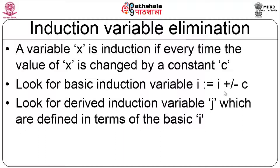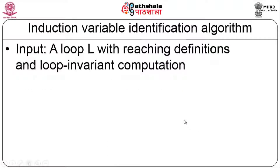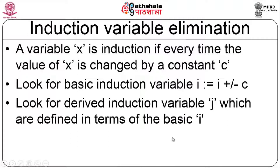We also have a derived induction variable, where the value of J is defined in terms of the basic induction variable I. That is, J equals I plus or minus some constant C. Typically, J is expressed as I times C plus D — a multiplicative constant C with an offset D. Every time I changes, J will also change, so J is called a derived induction variable.